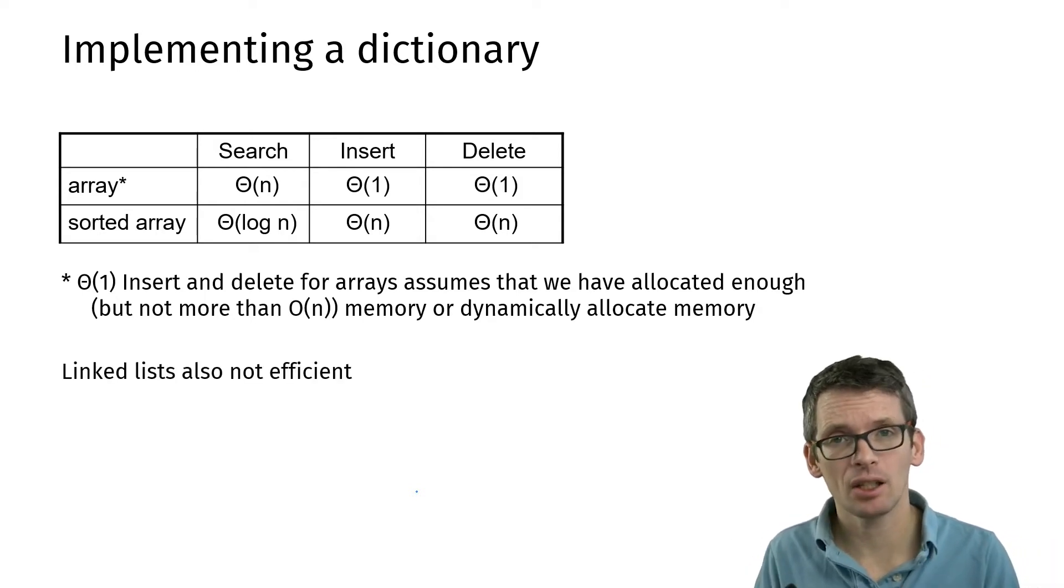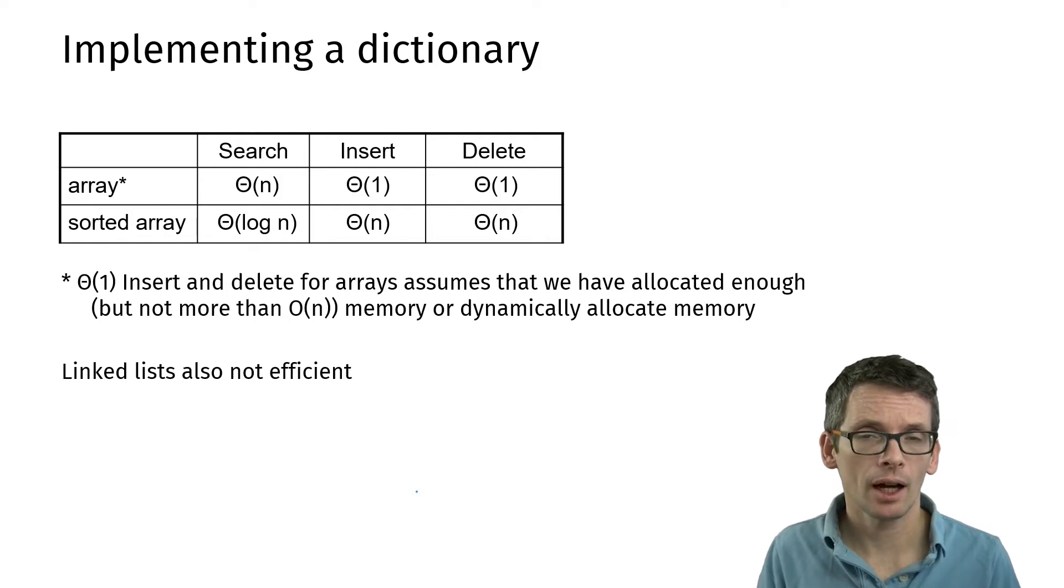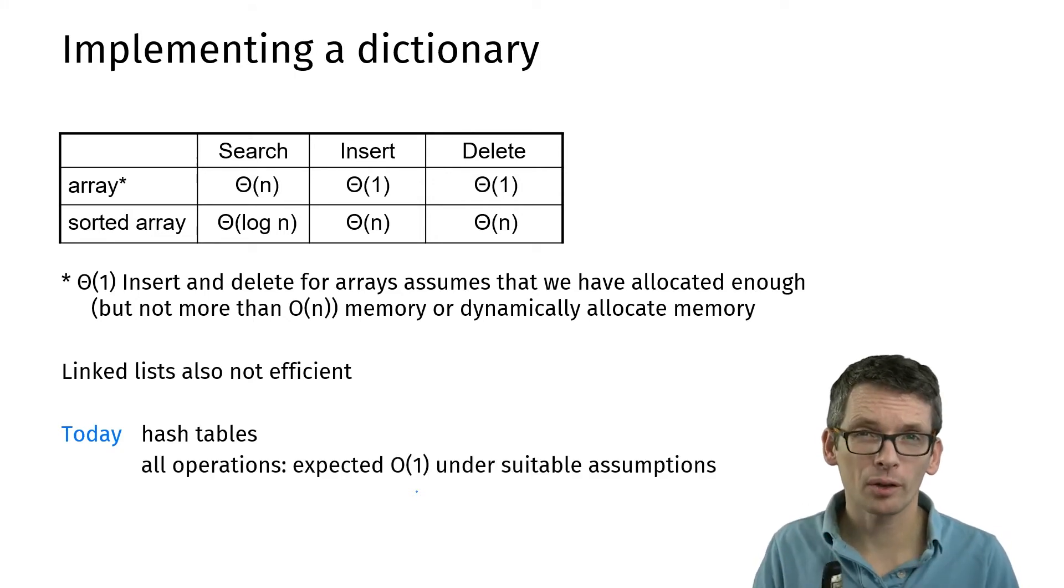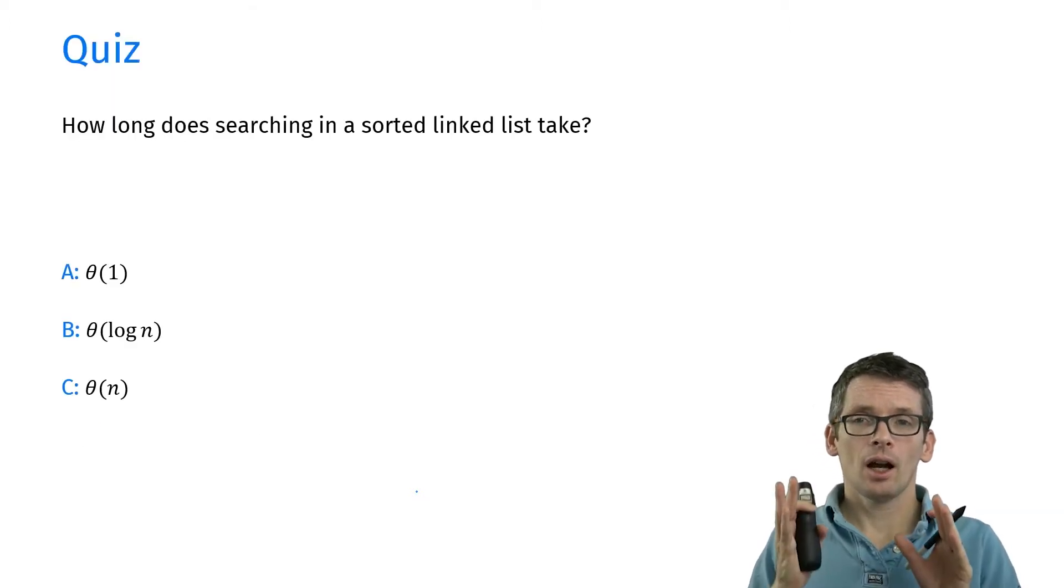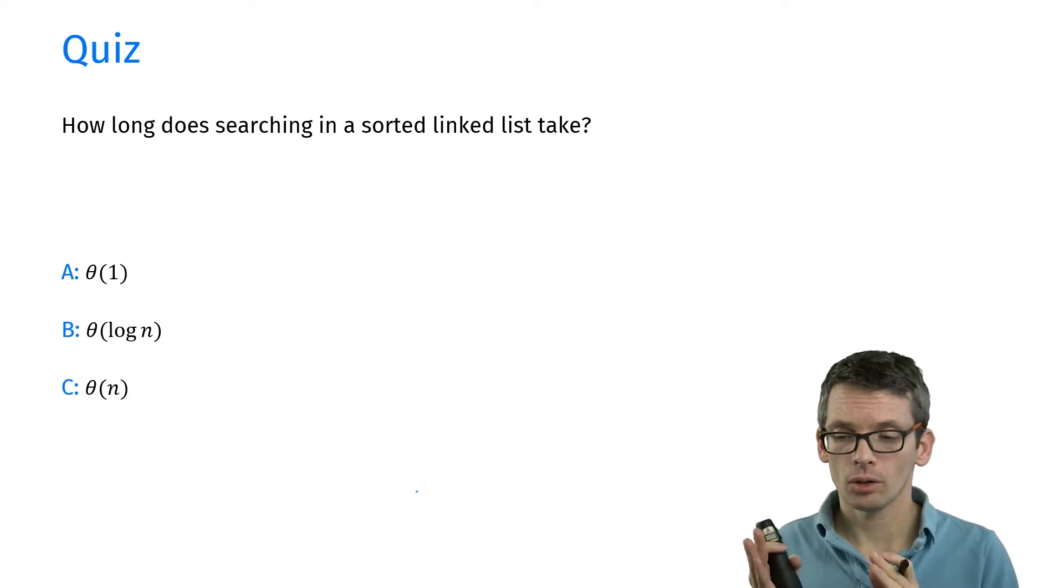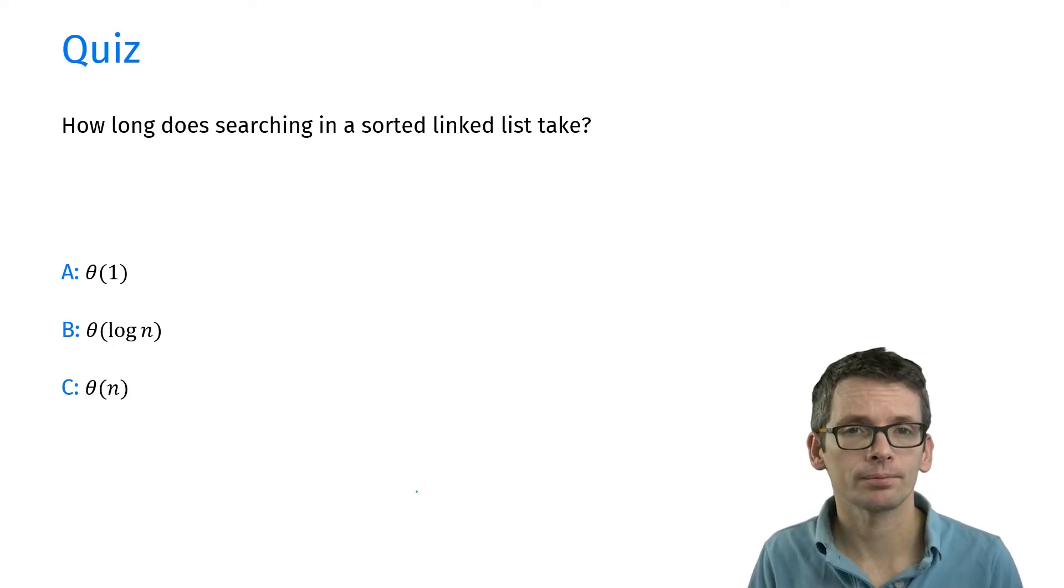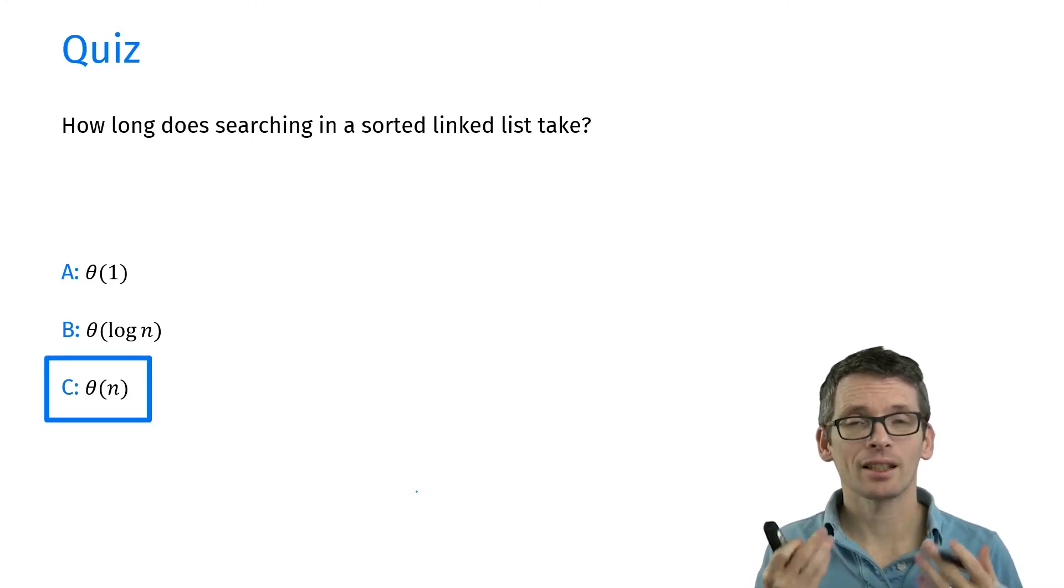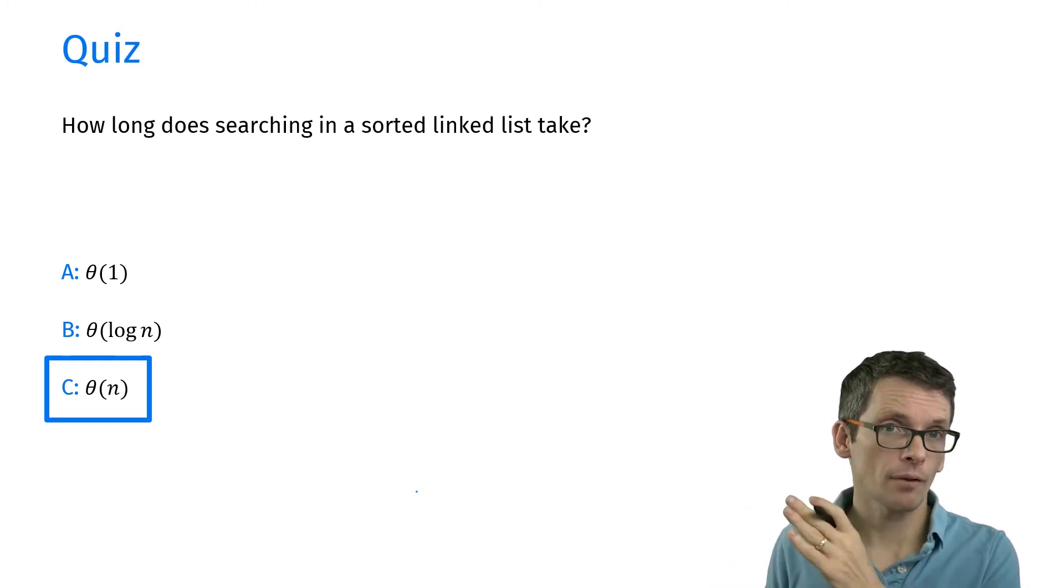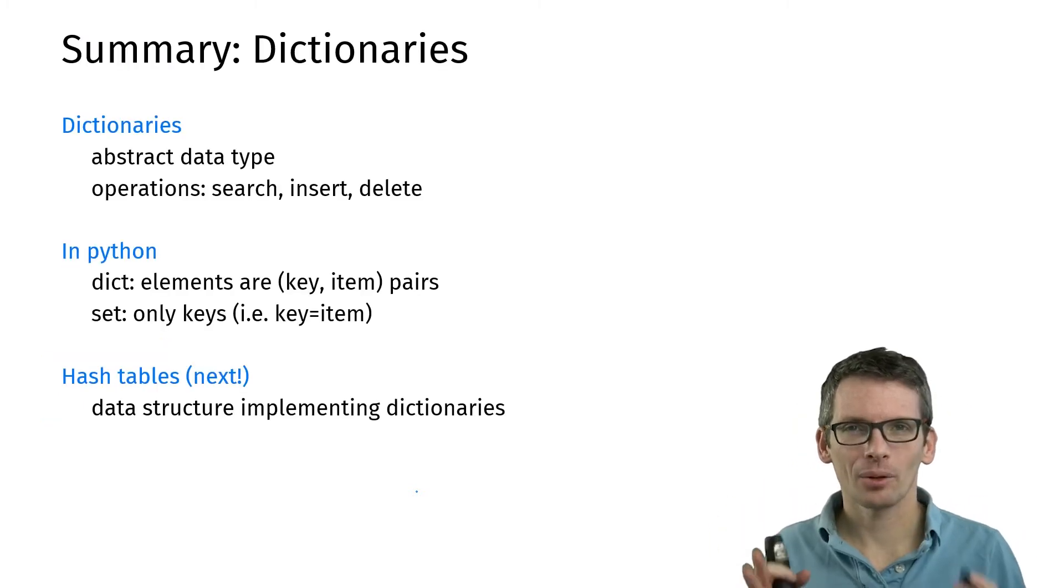So how about linked lists? Linked lists will have similar issues. How long does searching take in a sorted linked list—constant, order log n, or linear time? For a linked list, even if it's sorted, searching takes linear time because on a linked list I cannot do something like binary search. I only have the option of going through it from start to finish.